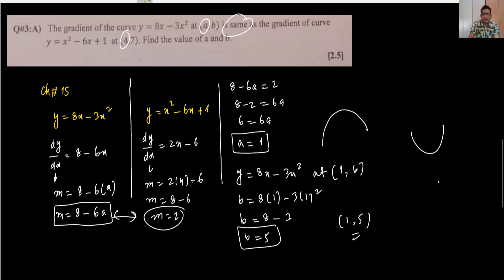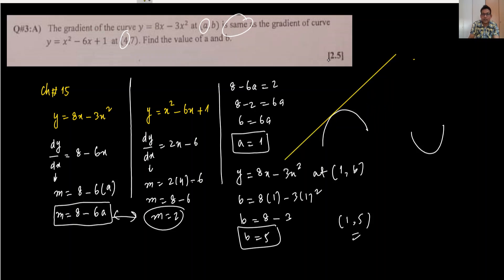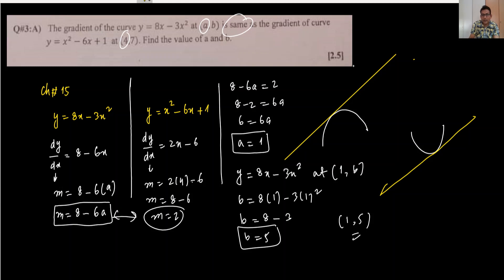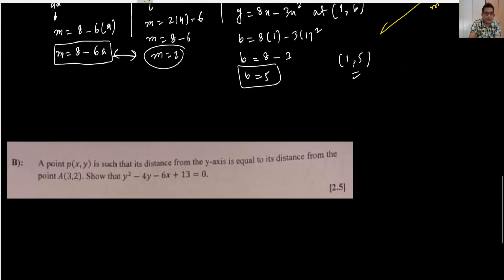This can be visualized as a curve y = 8x - 3x² and a second curve with the same gradient, meaning their tangents are parallel. The gradient at point (a, b) on the first curve was 8 - 6a, equated to 2 from the second curve, giving coordinate (1, 5).